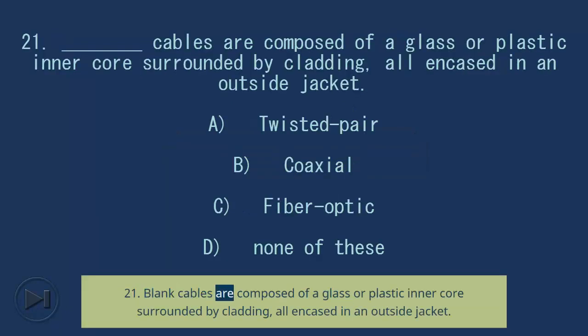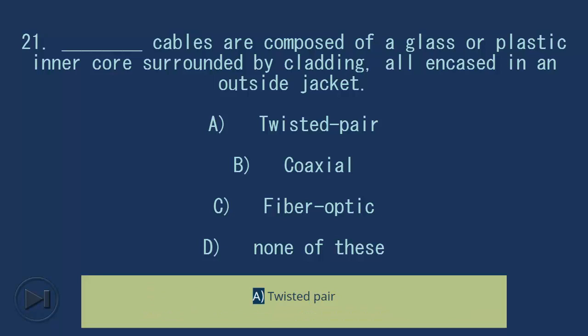Question 21: Blank cables are composed of a glass or plastic inner core surrounded by cladding, all encased in an outside jacket. A) twisted pair, B) coaxial, C) fiber optic, D) none of these. Answer: C, fiber optic.